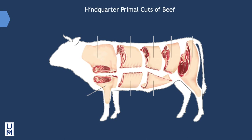The hindquarter consists of four primal cuts — the short loin, sirloin, flank, and round — and represents approximately 45% of overall carcass weight. The primal short loin is the anterior portion of the beef loin, located just behind the rib. It accounts for approximately 8% of carcass weight and contains a single rib — the 13th rib — and a portion of the backbone. With careful butchering, this small primal can yield several subprimal and fabricated cuts that are among the most tender, popular, and expensive cuts of beef.